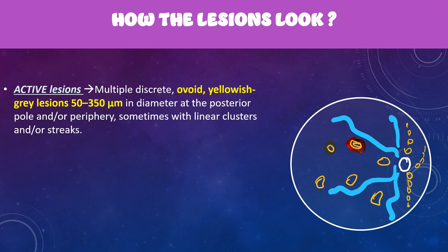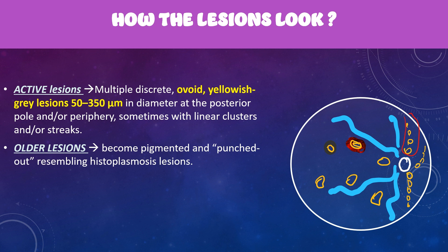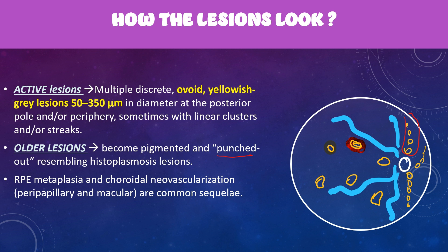Active lesions appear as multiple discrete oval yellowish-gray lesions, about 50 to 350 micrometers in diameter, located in the posterior pole and peripapillary area, more on the nasal side, arranged as Schlegel lines. Older lesions develop atrophy and pigmentation, giving a punched-out appearance similar to histoplasmosis lesions. As they affect the RPE, chronic disease leads to RPE metaplasia, and when there is a break in Bruch's membrane, it leads to development of a choroidal neovascular membrane.